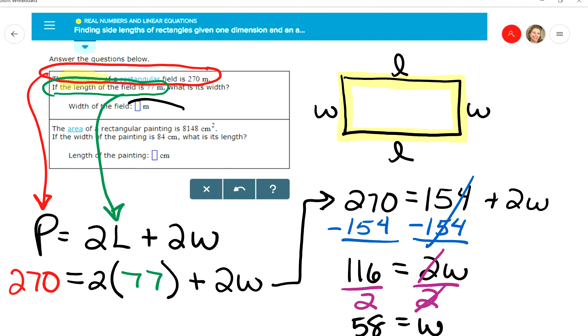So the answer right here is 58 meters. That is going to be the width of the field. So if this is 58 and this is 58, and they told me that this was 77 and this was 77, if you add up all four of these numbers, that should add up to 270.